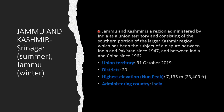The next one is Jammu and Kashmir, with its capital in summer being Srinagar and Jammu in winter. Jammu and Kashmir is a region administered by India as a union territory, consisting of the southern portion of the larger Kashmir region, which has been the subject of dispute between India and Pakistan since 1947 and between India and China since 1962. It has been a union territory from 31st October 2019. It has 20 districts and its highest elevation, Nantik, is 7,135 meters, that is 23,409 feet. Its administering country is India.